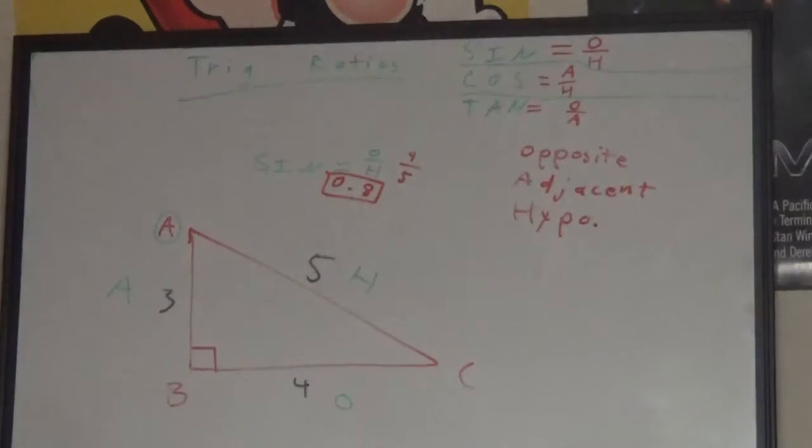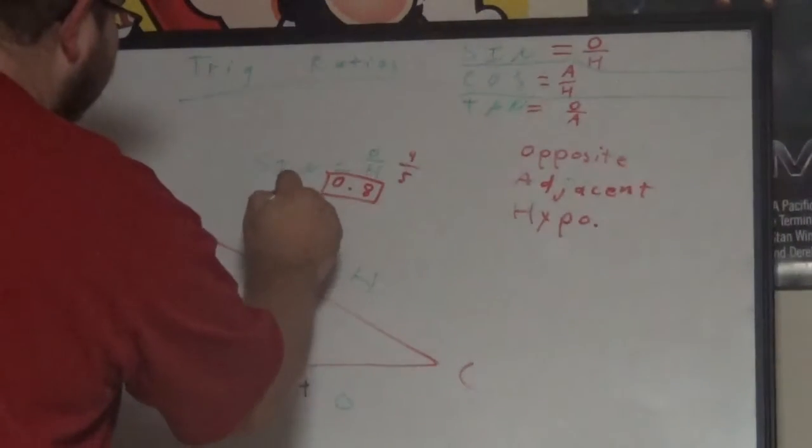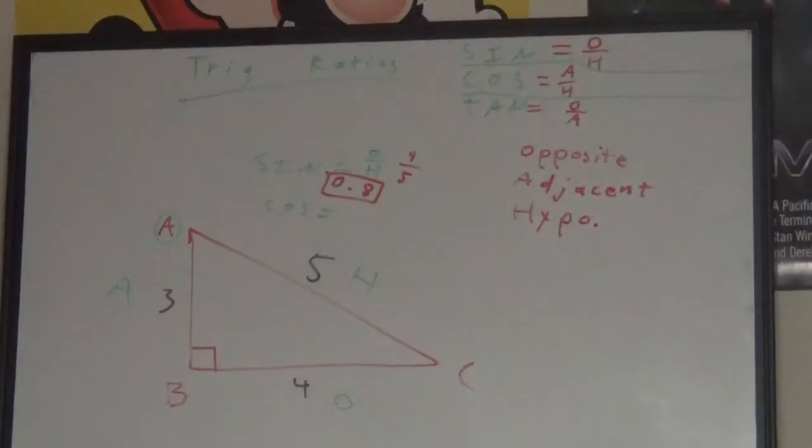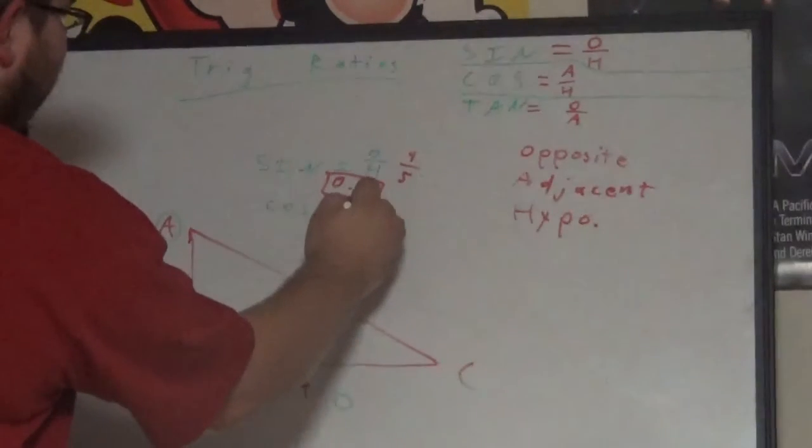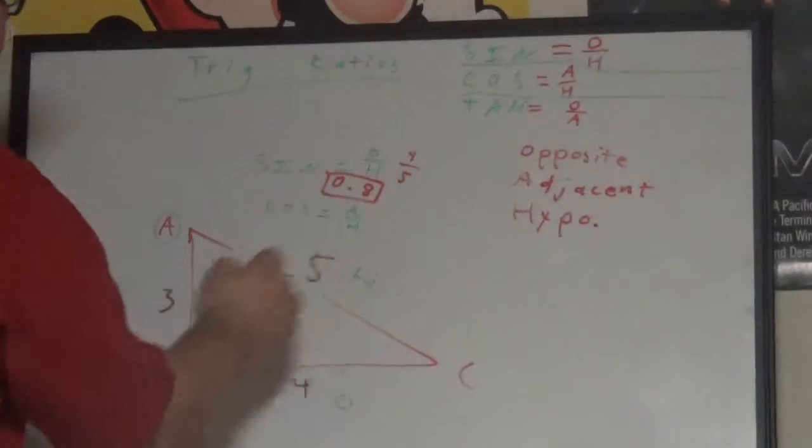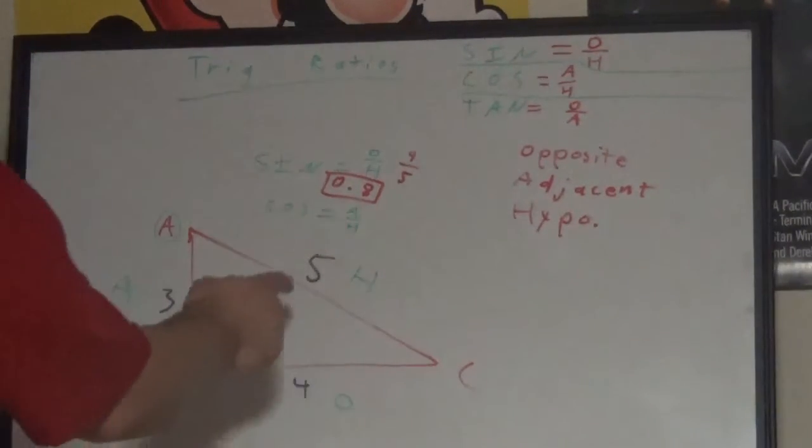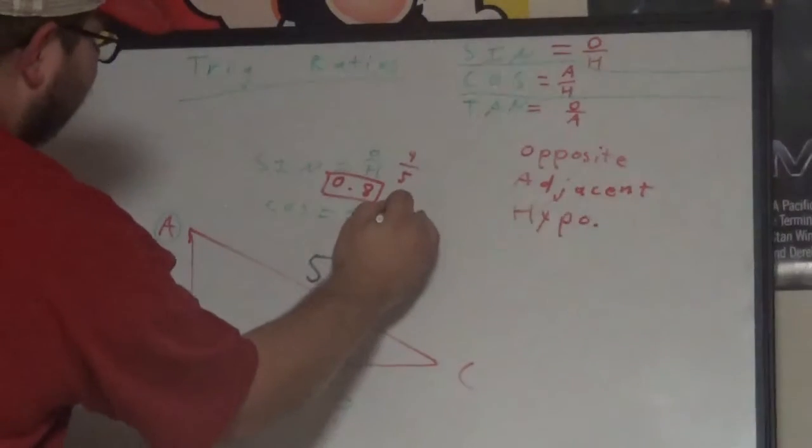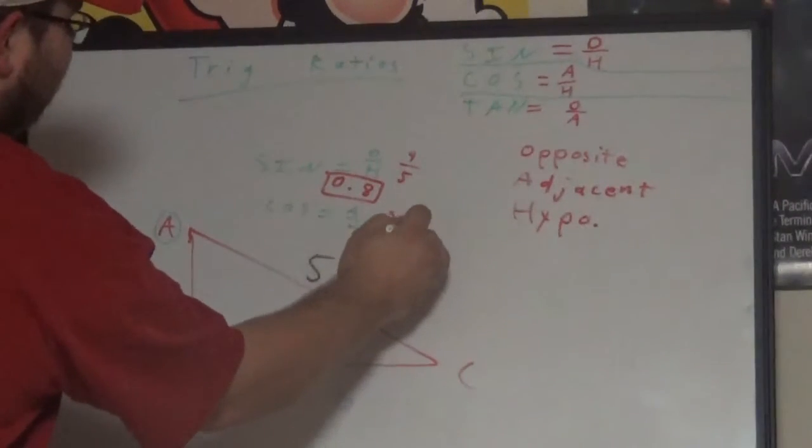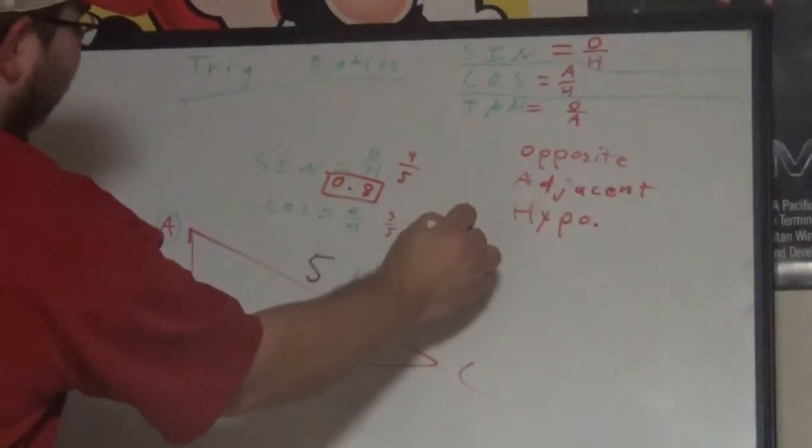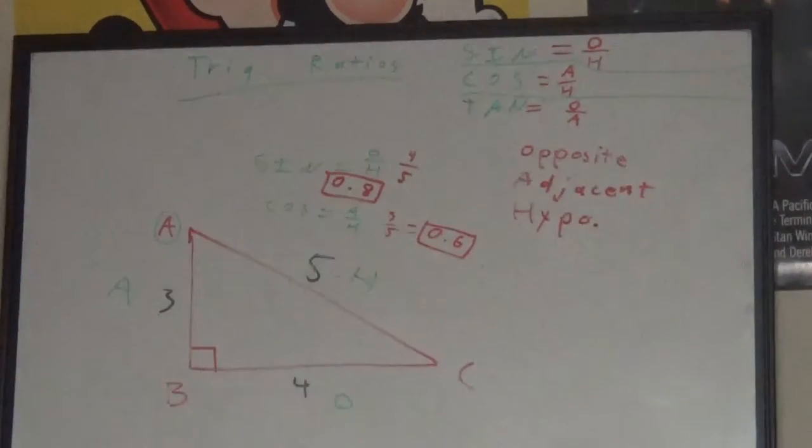Next I'll do cosine. Cosine this time is A over H. What's A? A is three. H is five. Three over five - put that in a calculator, three divided by five, equals 0.6.